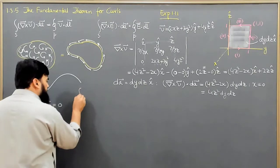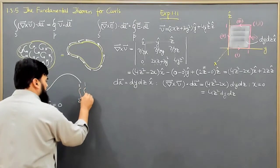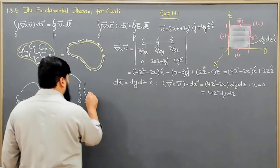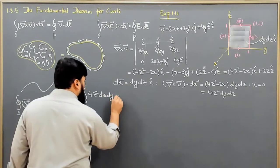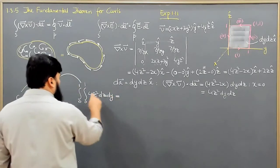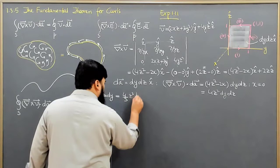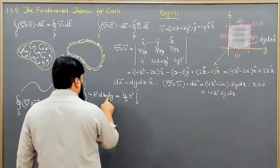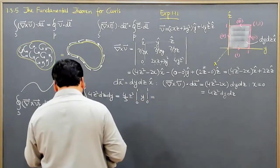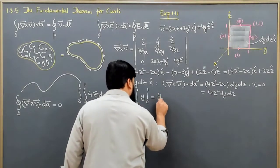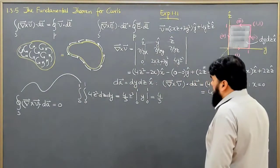Now I will integrate this one, so the integral is along dy and dz, with y from 0 to 1 and z from 0 to 1 for the unit square. Integrating 4z squared dz gives 4z cubed over 3, which equals 4/3, and integrating y from 0 to 1 gives a factor of 1, so the result is 4/3.